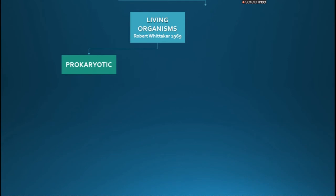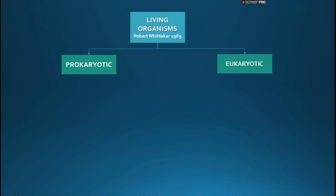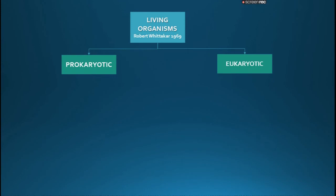Living organisms are mainly divided into two main groups: prokaryote and eukaryote, or prokaryotic and eukaryotic. Prokaryotic means the nucleus is not well defined. Eukaryotic means the nucleus is well defined. All living organisms on this planet are made up of cells, and every cell has a nucleus which controls the activities of the cell. But in prokaryotes, the nucleus is not well defined — this is the major difference between prokaryotes and eukaryotes.